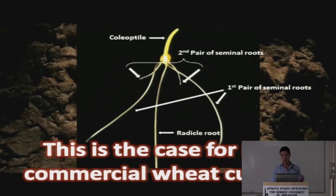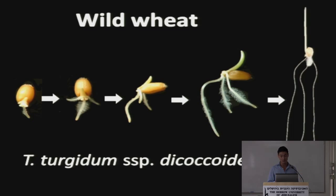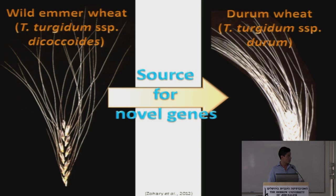But there are other cases, such as in wild wheat — for example, Triticum turgidum subspecies dicoccoides — where the same sequence begins: first the radicle, then part of the coleoptile, but it stops or delays the development of the second pair of seminal roots. You may wonder what advantage this has, so I'll elaborate.